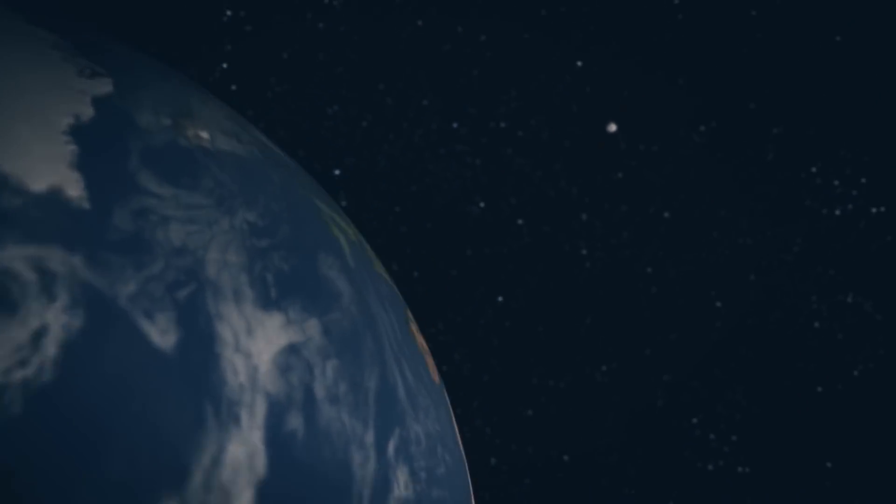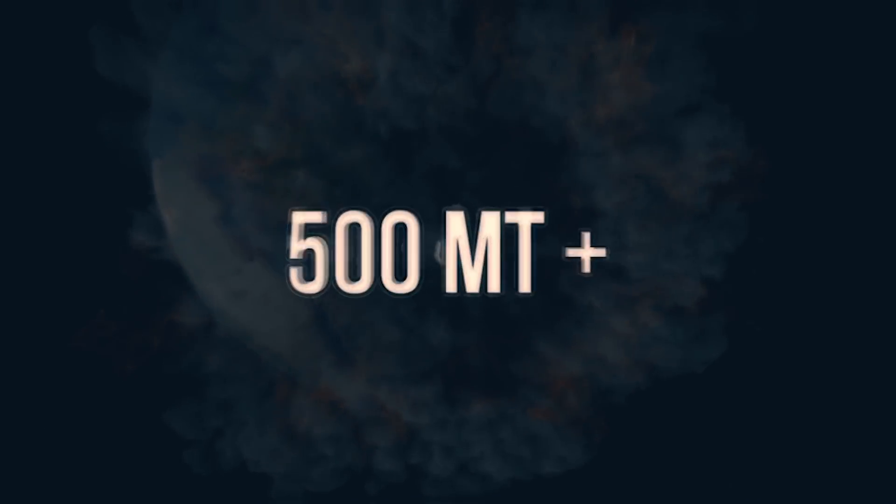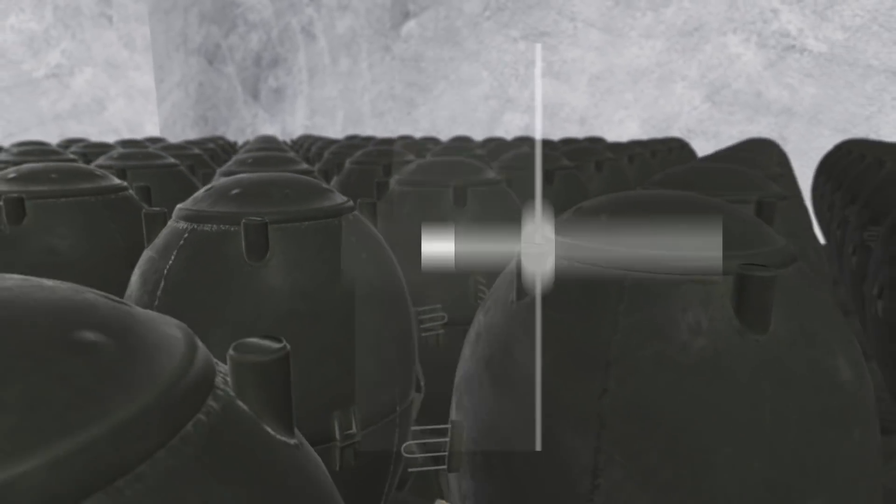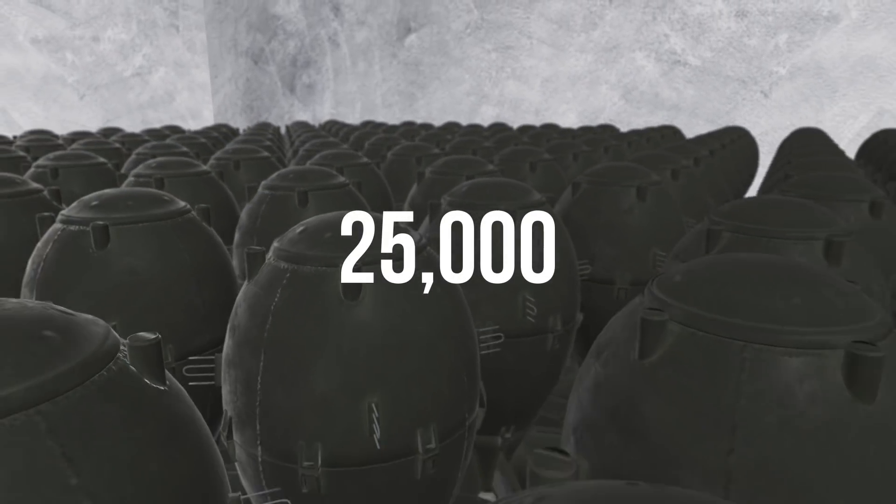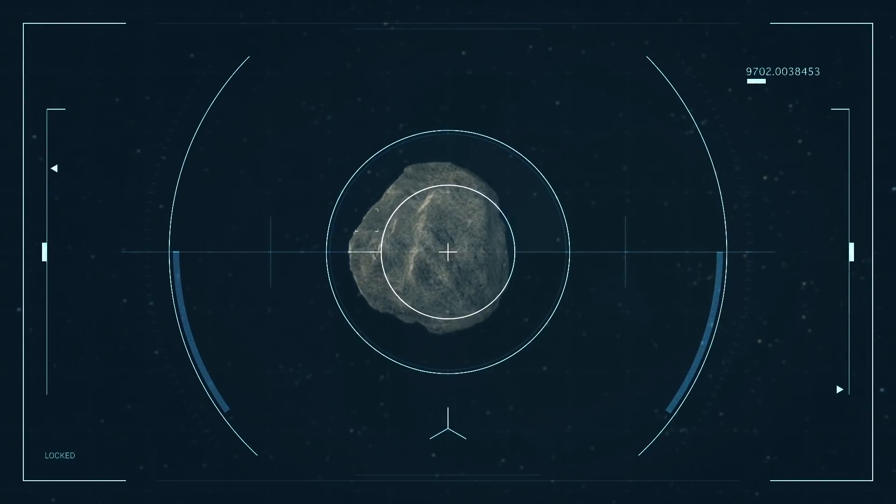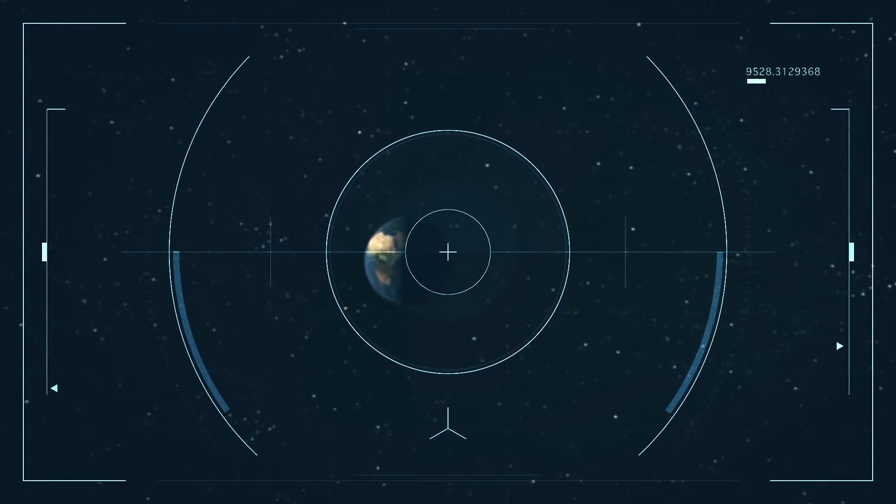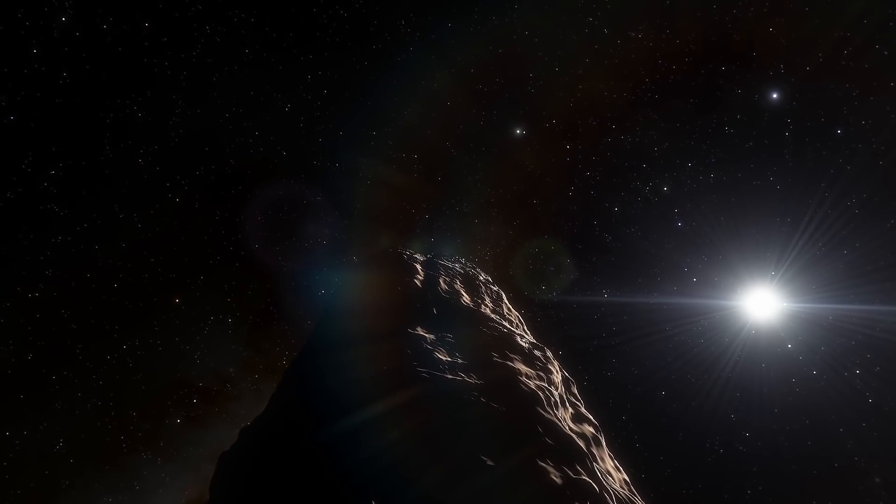The energy of its potential collision with our planet is estimated by NASA experts to be more than 500 megatons. This is the energy of 25,000 plutonium bombs detonated over Nagasaki in 1945. But at the same time, the 300-meter Apophis is just a small grain of sand compared to the real giants.